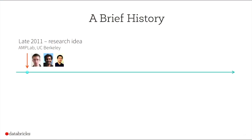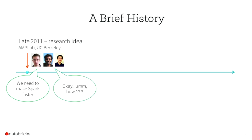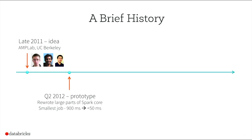A brief history of how this started: back in AmpLab in late 2011, we decided to try doing stream processing on top of Spark. Matei said we need to make Spark faster for that. Six months later, after a lot of hacking, we built a prototype that required rewriting a bunch of the internals of Spark. Earlier, the smallest Spark job used to take a second, but we reduced it to less than 50 milliseconds, and it has improved even further since then.